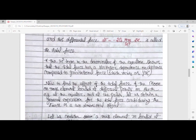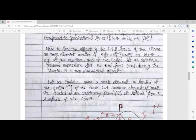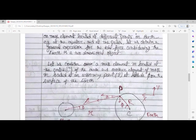To find the effect of tidal force of the moon on mass elements located at different points on Earth, for example at the equator and at the poles, let us obtain a general expression for tidal force by considering Earth as a two-dimensional object.